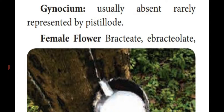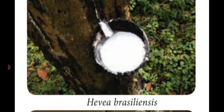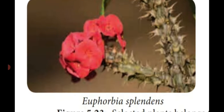Female flower: bract is present — bractiate; bracteole absent — ebracteolate. See the diagram — this is Hevea brasiliensis, the rubber tree, from which we get rubber products like tyres and slippers. This white colored latex is produced from the rubber tree Hevea brasiliensis. Euphorbia splendens is a hydrophytic plant producing colored flowers. Female flower contains a stalk-like portion — pedicellate. Female flowers are open for 14 days, present at the apical portion of the inflorescence.